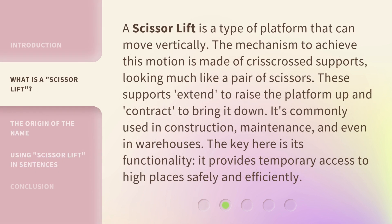A scissor lift is a type of platform that can move vertically. The mechanism to achieve this motion is made of crisscrossed supports, looking much like a pair of scissors. These supports extend to raise the platform up and contract to bring it down. It's commonly used in construction, maintenance, and even in warehouses. The key here is its functionality — it provides temporary access to high places safely and efficiently.